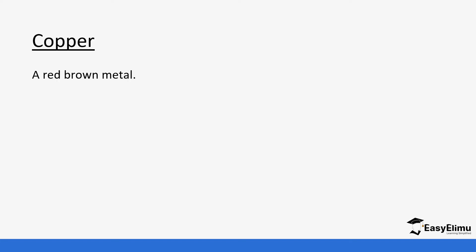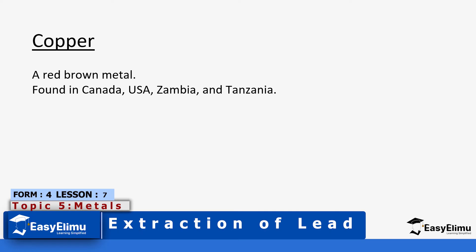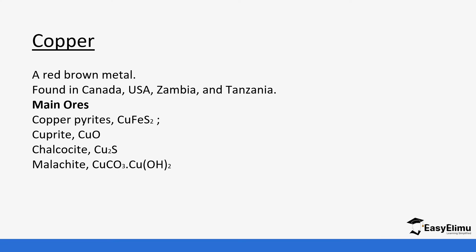Copper is a red-brown metal and it's mainly found in Canada, USA, Zambia, and Tanzania. Some of the main ores of copper are copper pyrite — you'll hear us talking about copper pyrite a lot — cuprite, chalcocite, and malachite.